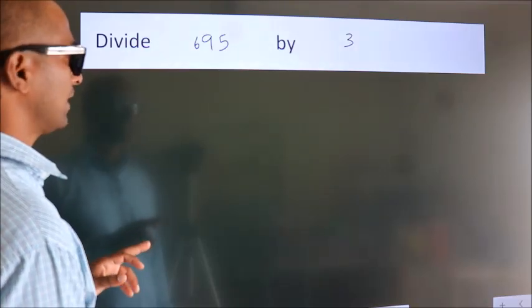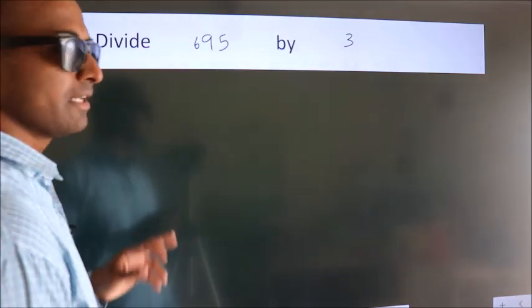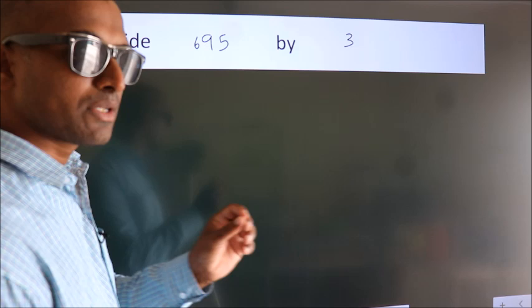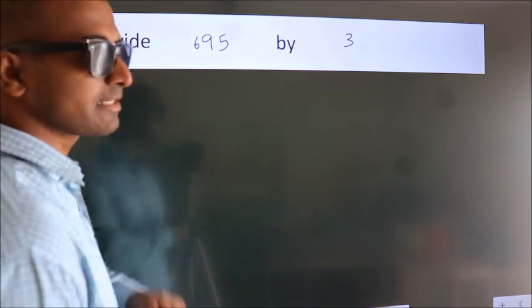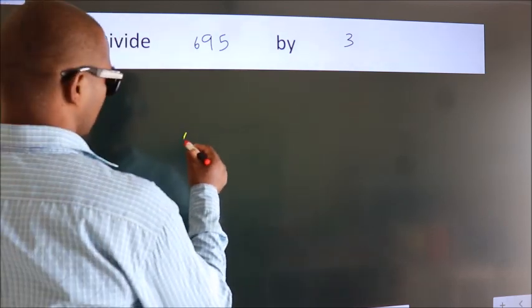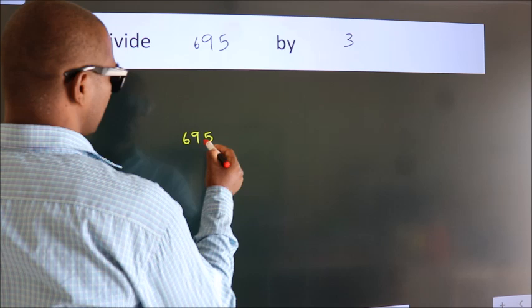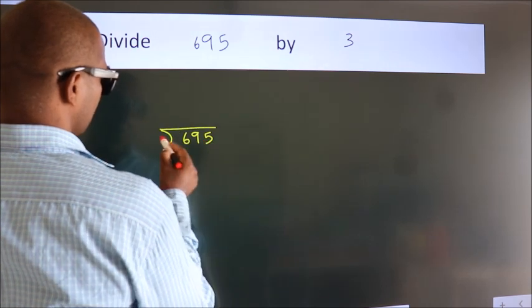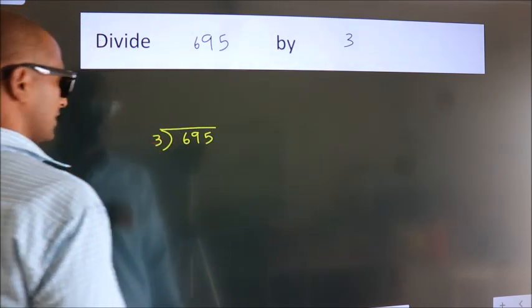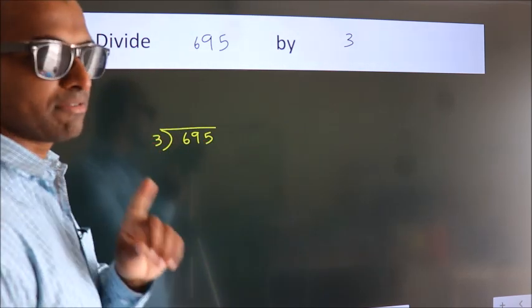Divide 695 by 3. To do this division, we should frame it in this way. 695 here, 3 here. This is your step 1.